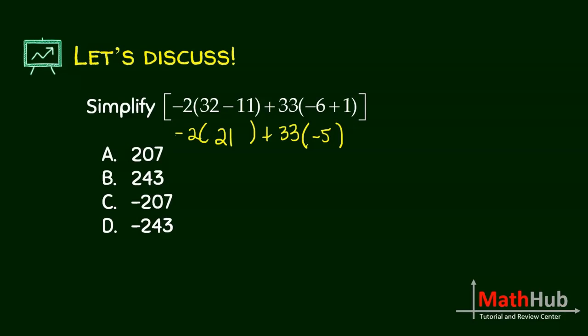Our goal is to always remove the grouping symbols. This one means multiplication. So negative 2 times 21 is negative 42 plus 33 times negative 5.